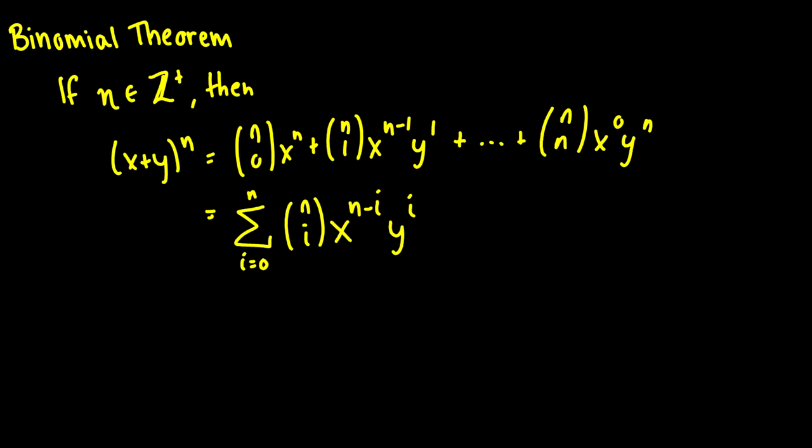Sometimes we have polynomials that, when expanded, can be a little bit difficult to do step by step. So we have this really cool binomial theorem that does it for us. It says that if n is a positive integer, then (x + y)^n equals n choose 0 times x^n, plus n choose 1 times x^(n−1) times y, plus dot dot dot, all the way up to n choose n times y^n.